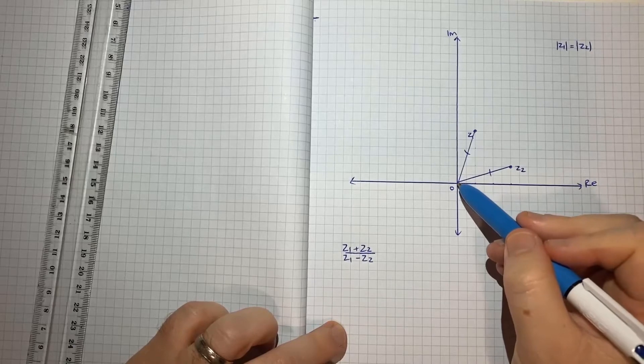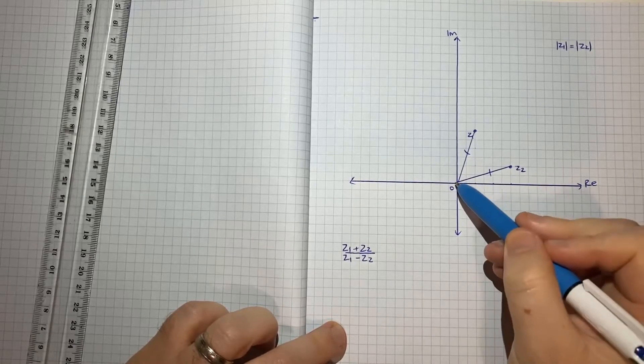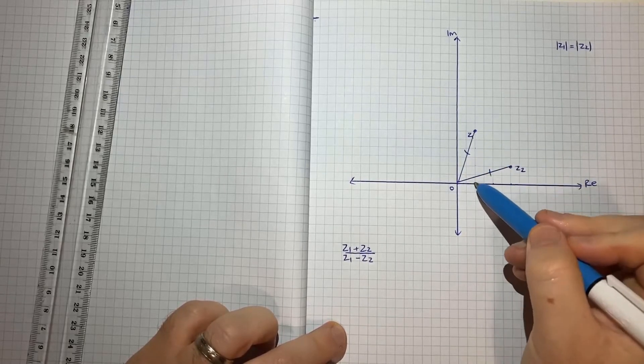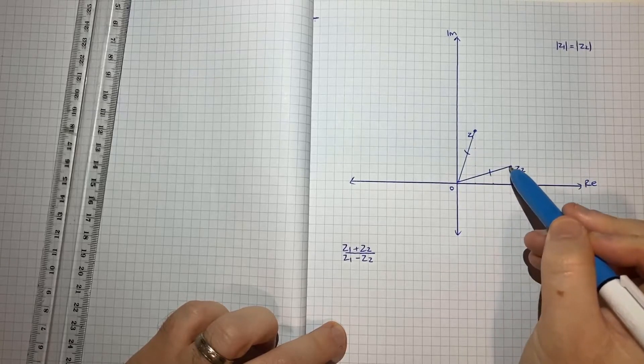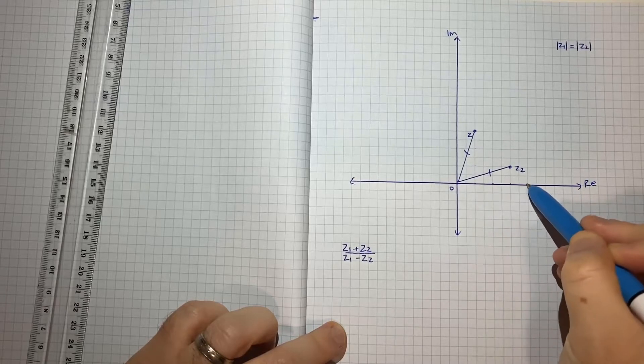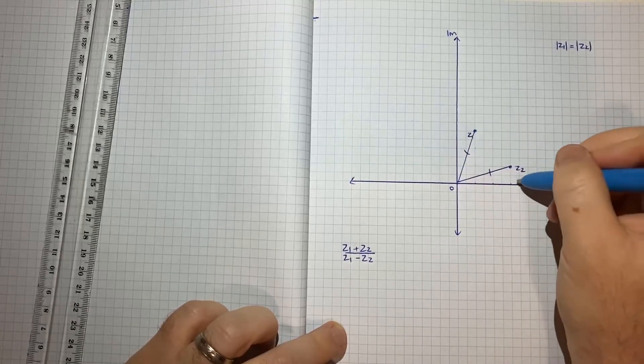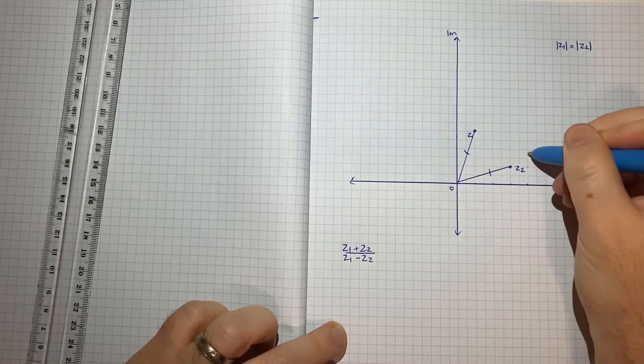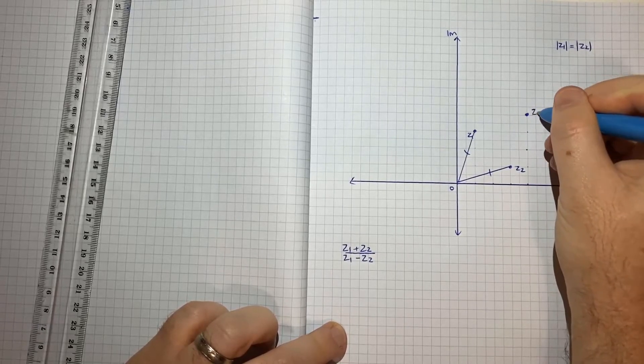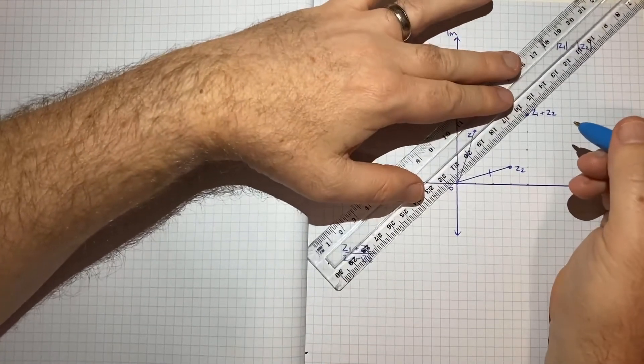So z1 plus z2, we could combine the horizontal movements and the vertical movements to get the addition. So here for z1 I moved across 2 and for z2 I moved across 6, so I want to move across 2, 4, 6, 8. And for z1 I moved up 6 and for z2 I moved up 2, so I want to move up 2, 4, 6, 8. So that point there is going to be my z1 plus z2 drawn somewhat to scale.